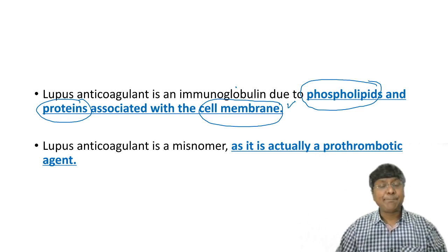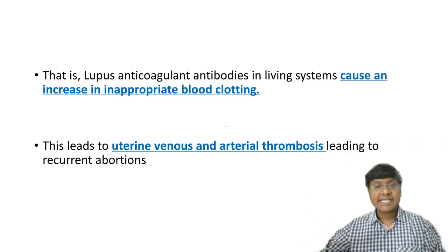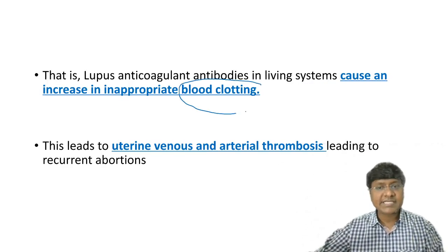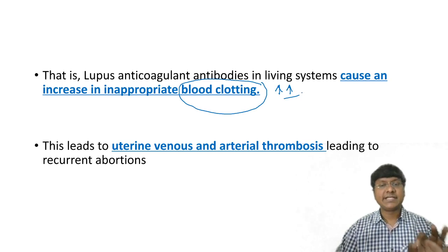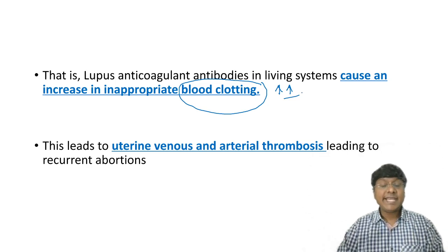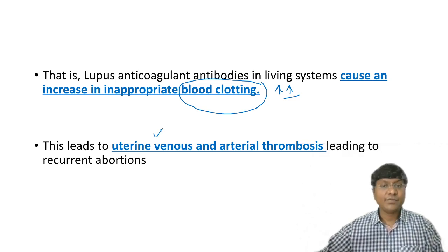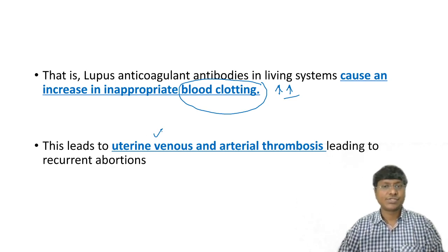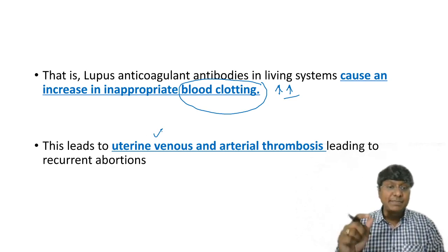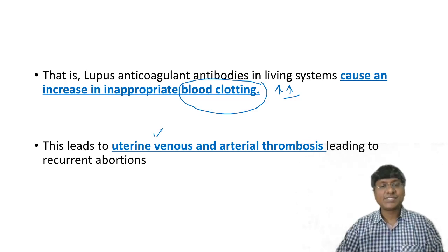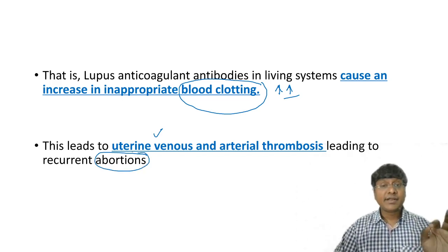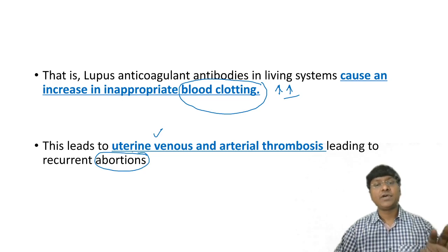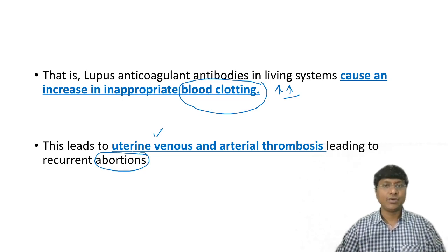Lupus anticoagulant is a prothrombotic agent, meaning it has the property of increased tendency of blood clotting. Because of this increased tendency of blood clotting, it can cause thrombosis in the uterine venous as well as arterial thrombosis, thereby reducing blood supply to the fetus and resulting in recurrent abortions.